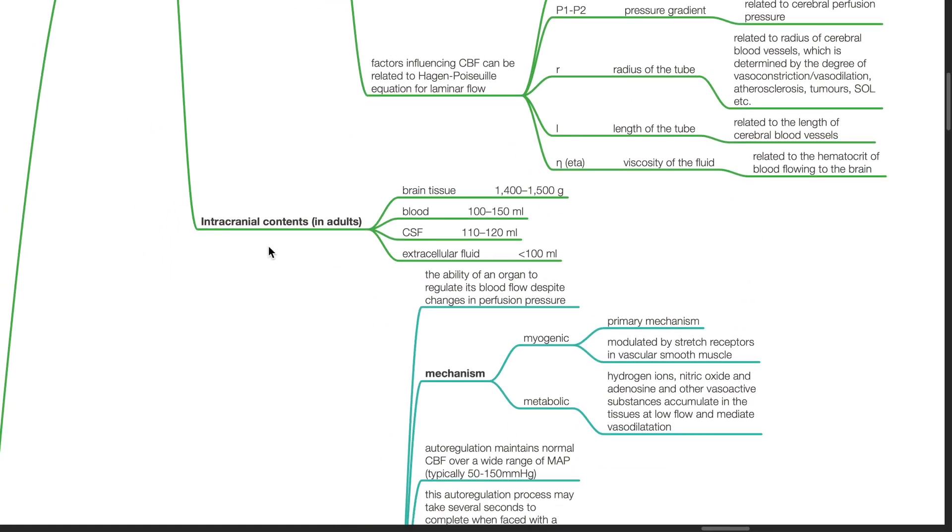Intracranial contents in adults: brain tissue 1.4 to 1.5 kg, blood 100 to 150 mL, CSF 110 to 120 mL, extracellular fluid less than 100 mL.